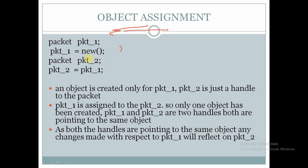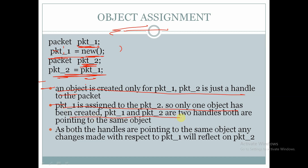Let us consider two class handles called pkt1 and pkt2 — both are handles of type packet. Here we are assigning the object for pkt1 by the keyword new, and here we are copying pkt2 equal to pkt1, so an object is created only for pkt1. pkt2 is just a handle pointing to the same object as pkt1. Only one object has been created.